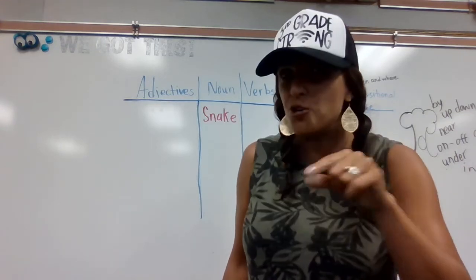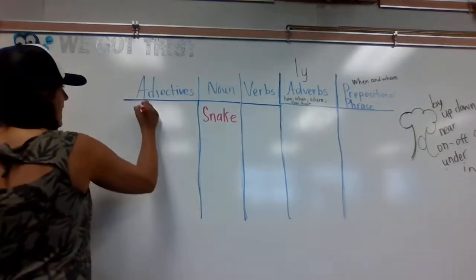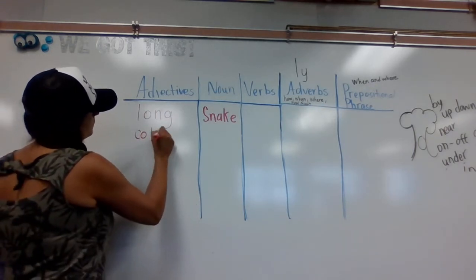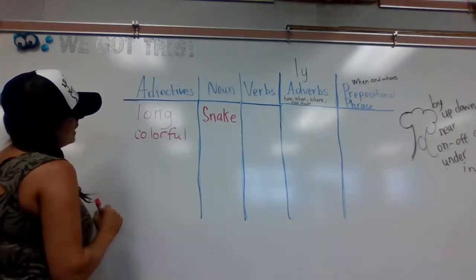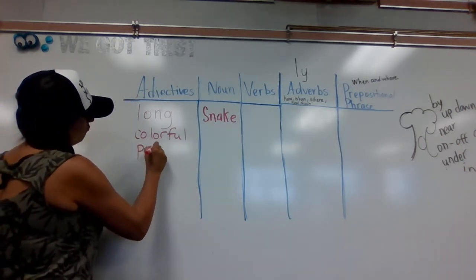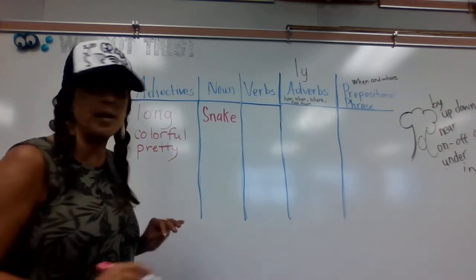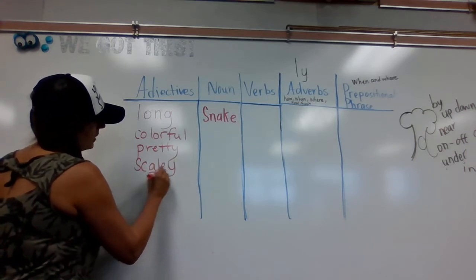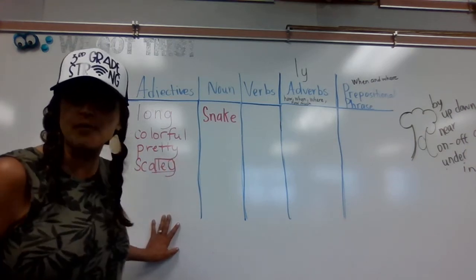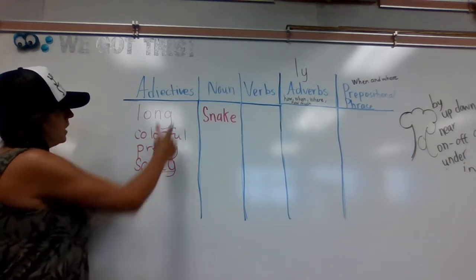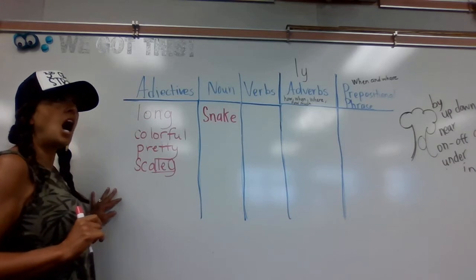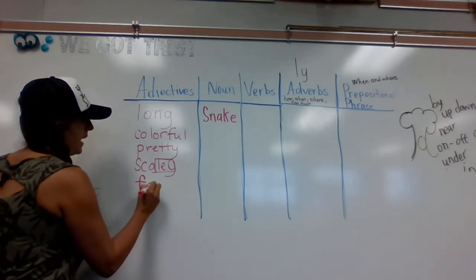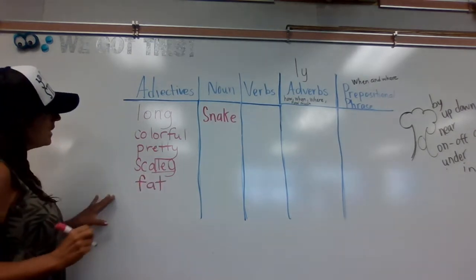Did you say long? Yeah! A snake can be very, very long. A snake can be colorful, and a snake can be pretty with all their crazy patterns. It can also be scaly — I'm going to check to make sure I spelled that right. Long, colorful, pretty, scaly... and a snake after it eats can be fat or gorged, right?